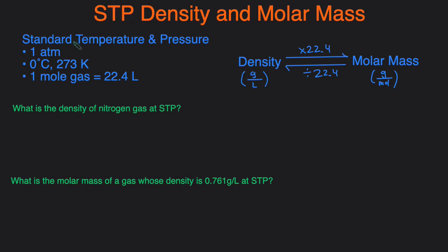STP stands for standard temperature and pressure. Standard temperature is 0 degrees Celsius or 273 Kelvin and standard pressure is 1 atm. Now if you're at both 1 atm and these temperature conditions then you're at STP, and what's so special about STP is that at STP one mole of gas takes up 22.4 liters of volume.